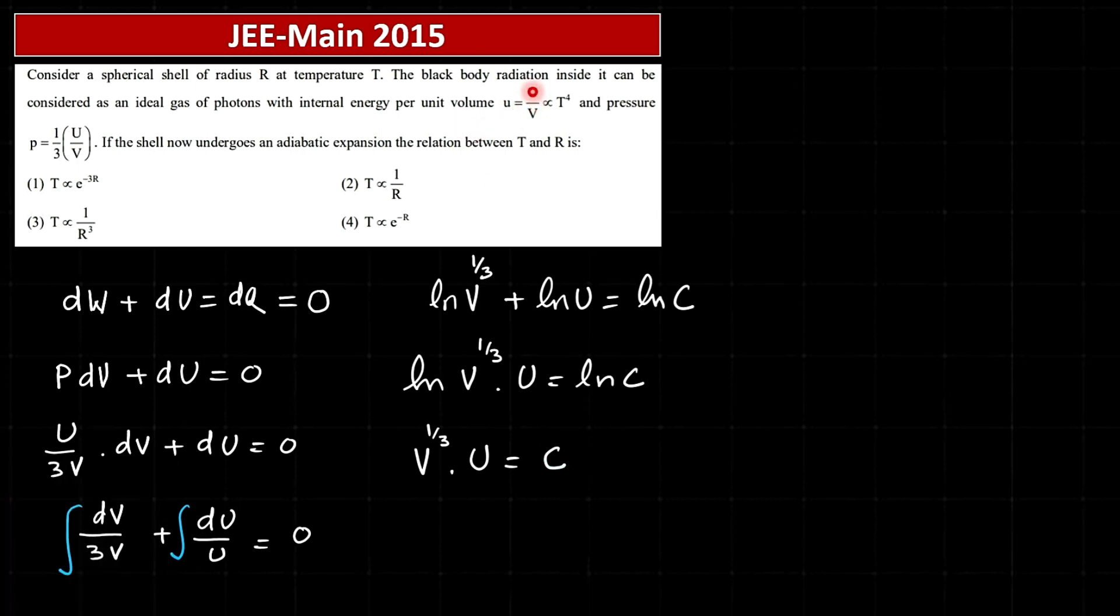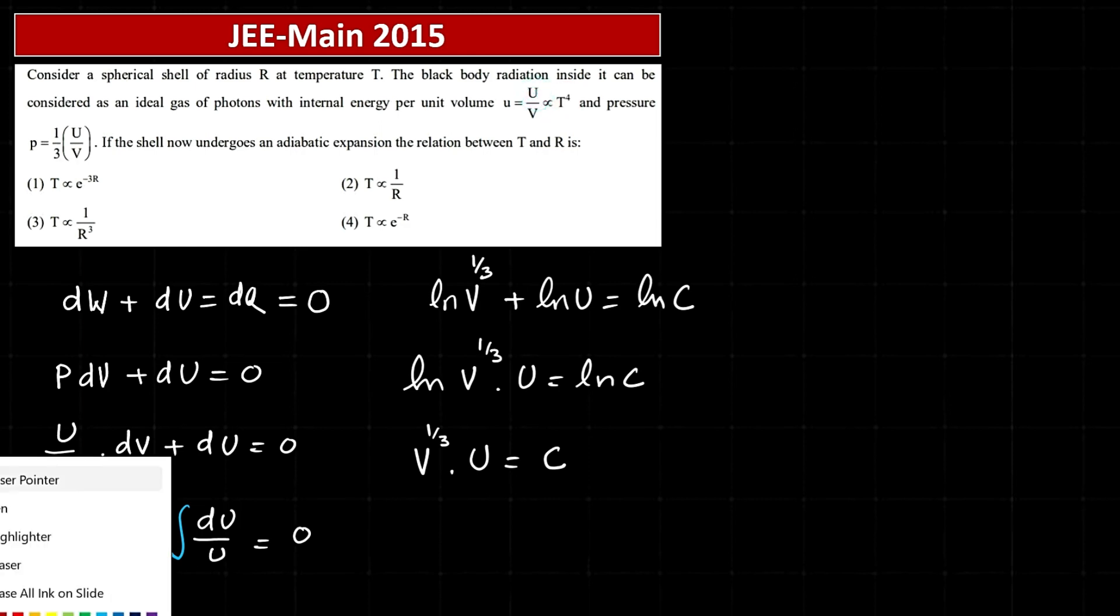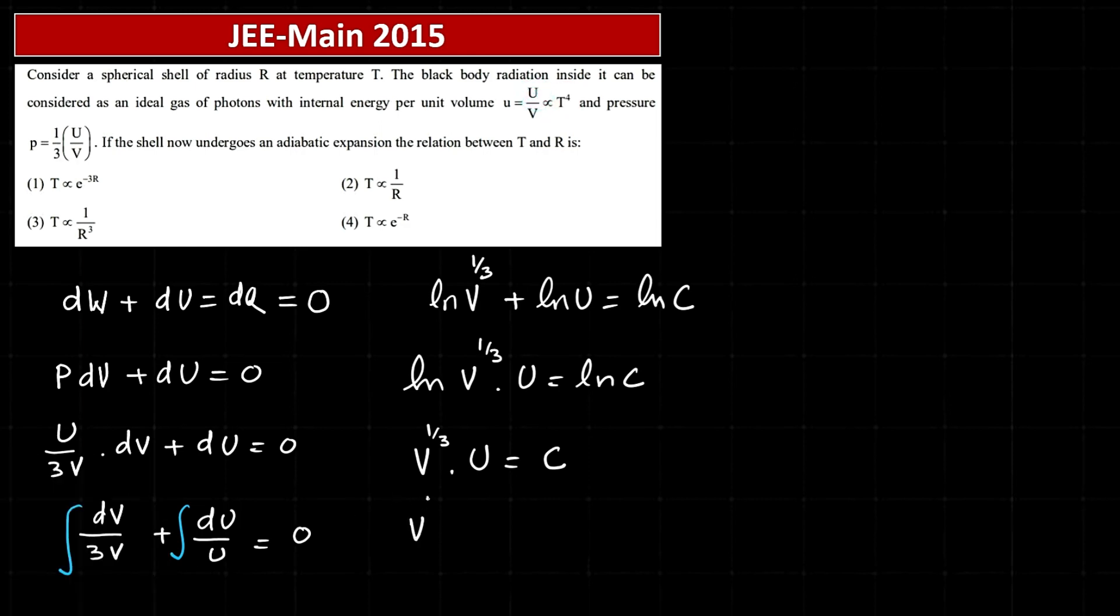And now use this U by V proportional to T to the power 4, so U equals some constant k into V into T to the power 4. So this is V to the power 1 by 3. In place of U, I'm writing k V T to the power 4. That equals C.